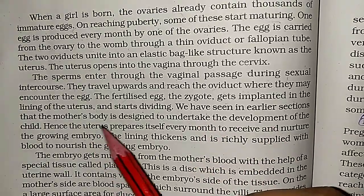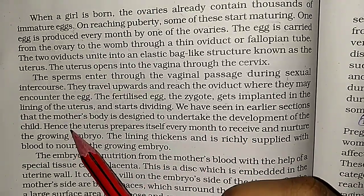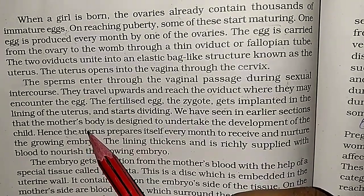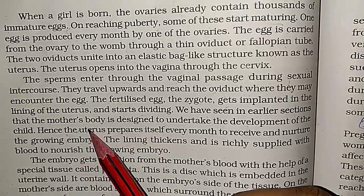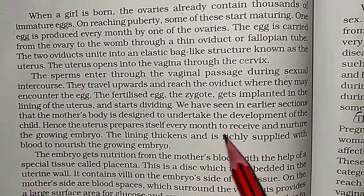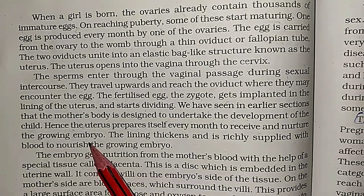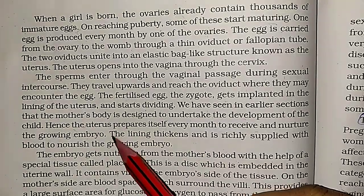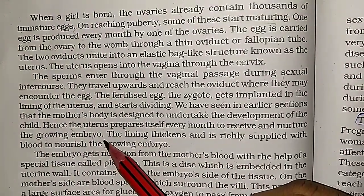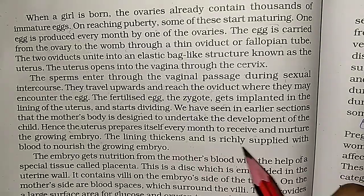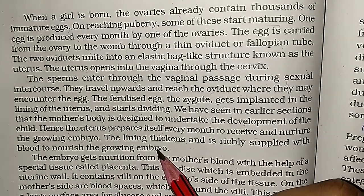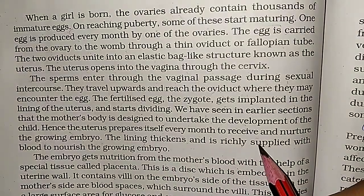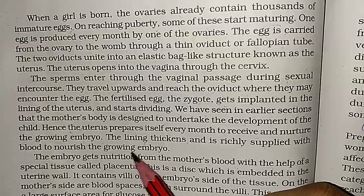We have seen in earlier sections that the mother's body is designed to undertake the development of the child. Hence the uterus prepares itself every month to receive and nurture the growing embryo. The lining thickens and is richly supplied with blood to nourish the growing embryo.